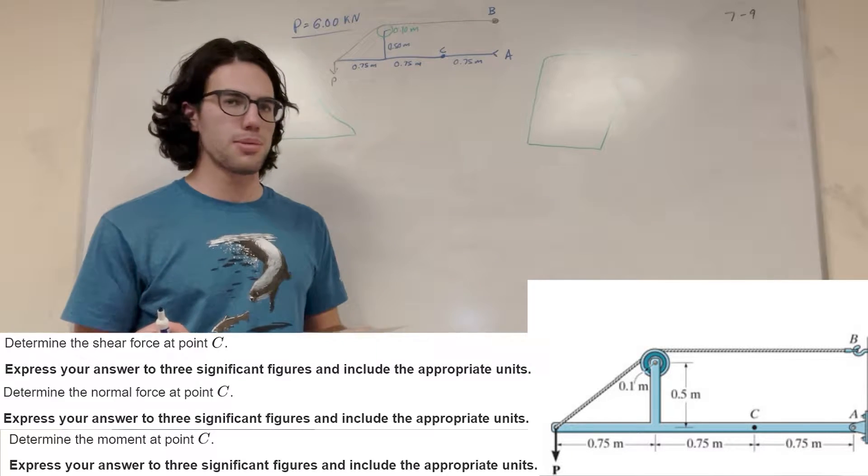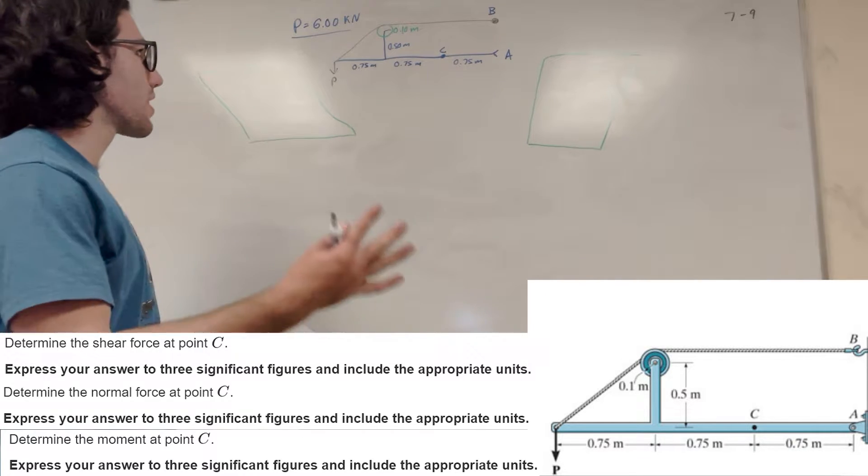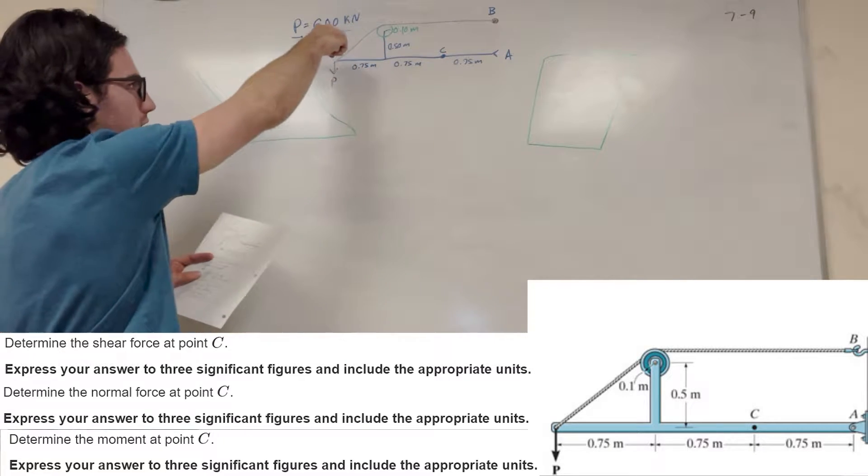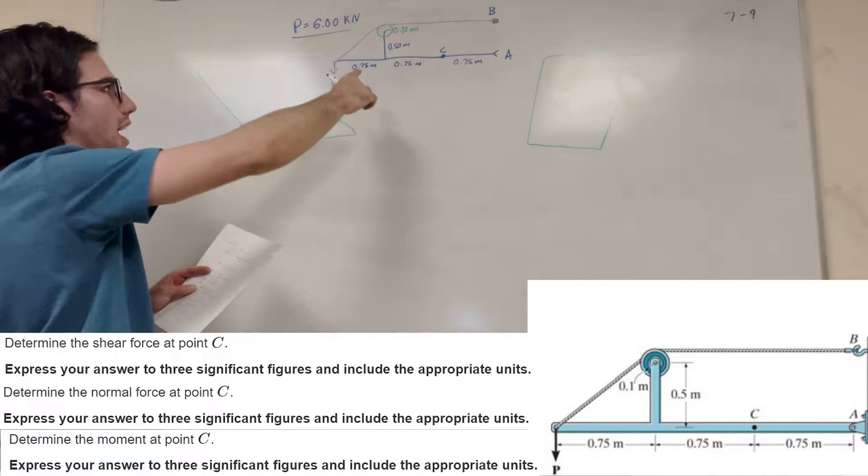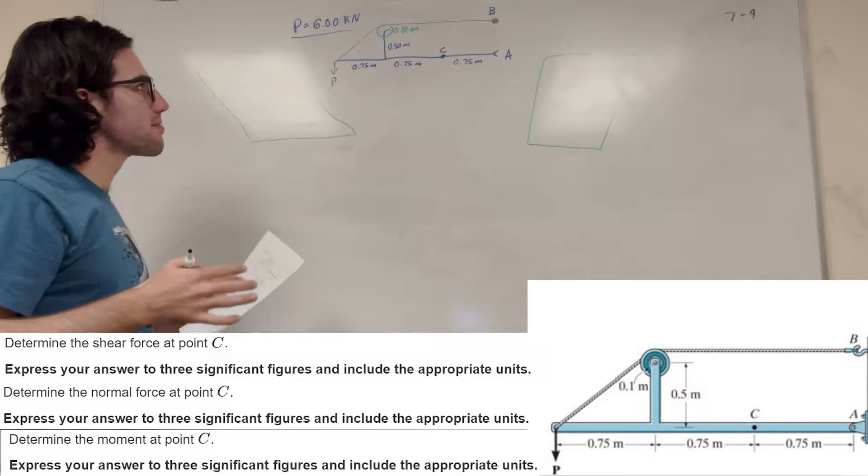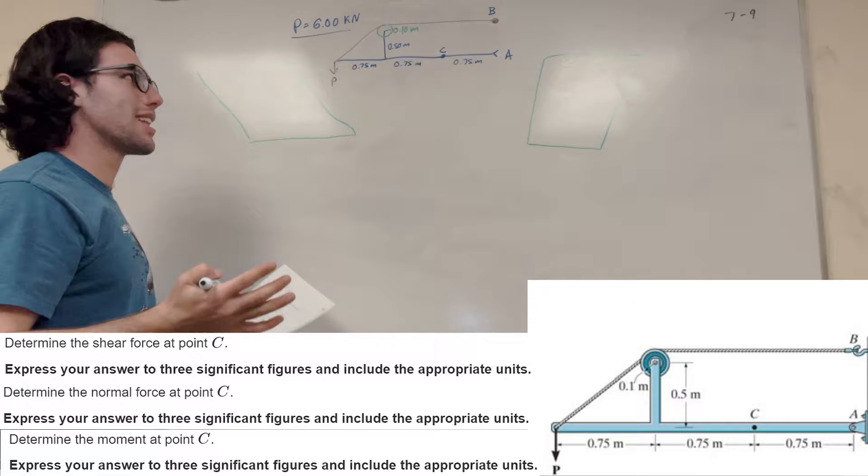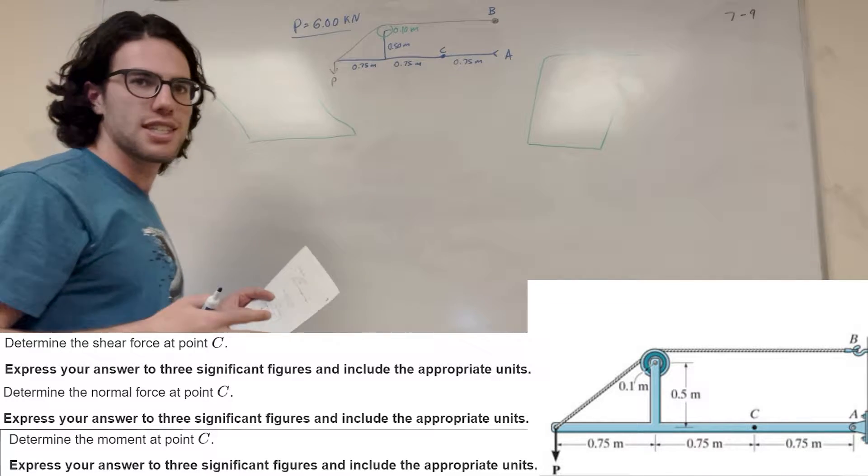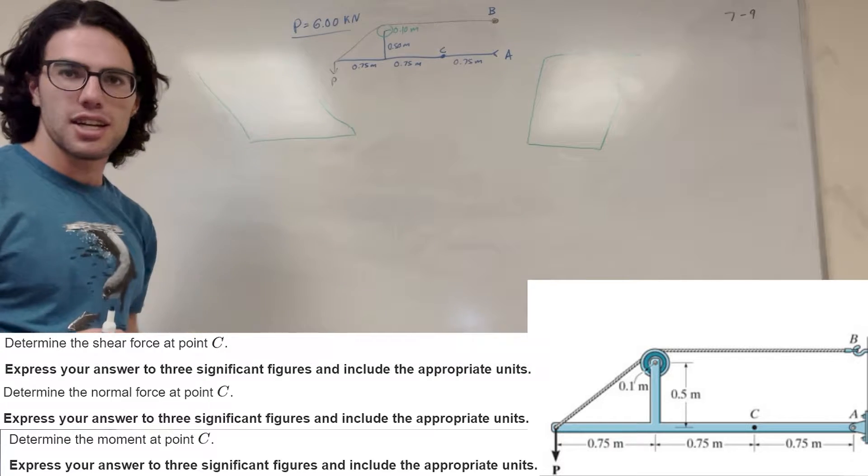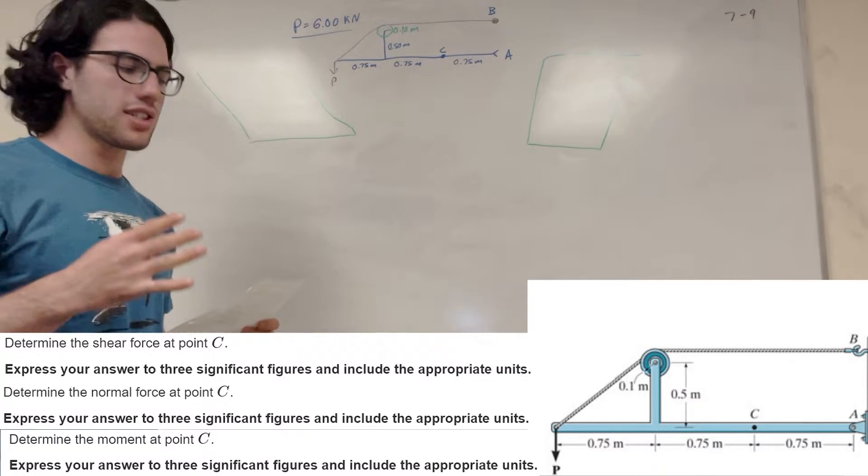What's up Cal gang? Alright, so we got the statics problem here. Let's go ahead and solve it. We have this tension that's being pulled over and then there's a P pulling down. And we have this bar that's holding up that tension. So that's basically what's happening. We have a couple distances, we got some forces. Make sure you know that my P is equal to 6. So let's go ahead and solve.